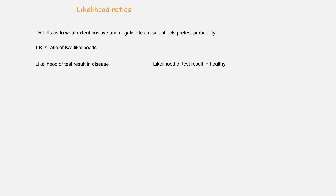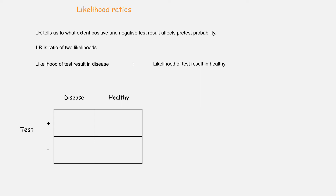After we have estimated pre-test probability, we calculate likelihood ratios. With many diagnostic tests, the test result can be positive or false negative in the presence of disease. So a positive or negative test result cannot confirm or exclude disease in all cases. Likelihood ratios tell us to what extent a positive or negative test result affects pre-test probability. Likelihood ratios are ratios of two likelihoods or two probabilities — that is, probability of a test result in a person with disease to probability of the test result in a person who is healthy. These ratios are calculated based on sensitivity and specificity of the test.